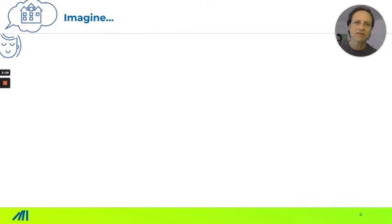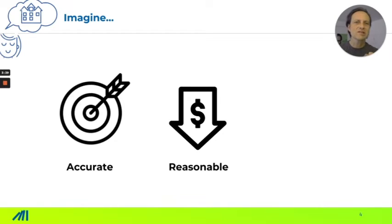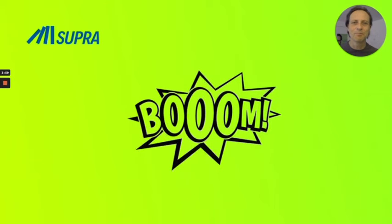Jordi is dreaming: imagine there could be a method which is super accurate and finds out what customers are willing to pay, which is reasonable and affordable — really matching his budget — and he can evaluate any product in his portfolio without waiting weeks, but with results within days. Wouldn't that be fantastic? Boom — Supra Price Optimizer is here. So how does it work?